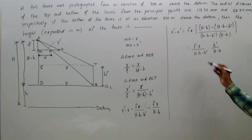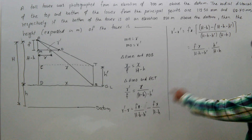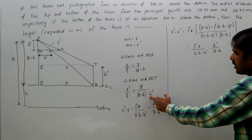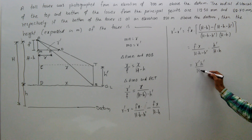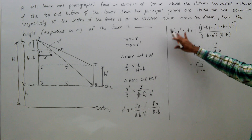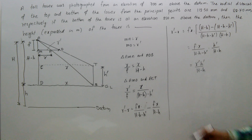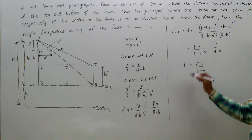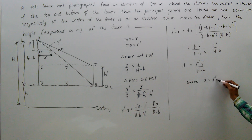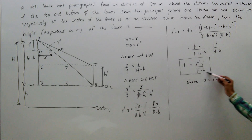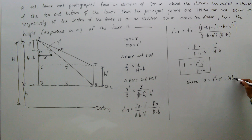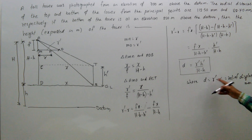From this equation, F into (H minus h minus h-dash) equals R-dash times (H minus h), so R-dash minus R simplifies. This R-dash minus R is called relief displacement D, where D equals R-dash minus R. The formula for relief displacement is: D equals R-dash times h-dash divided by (H minus h).